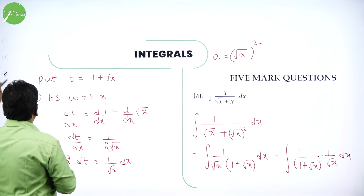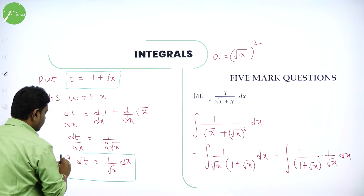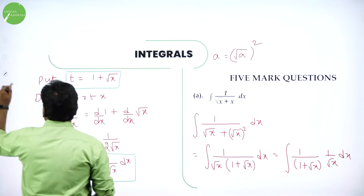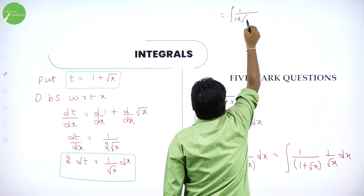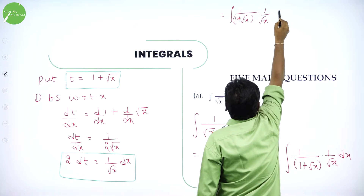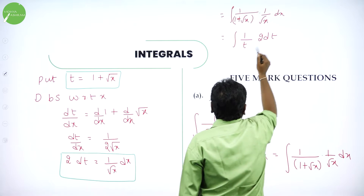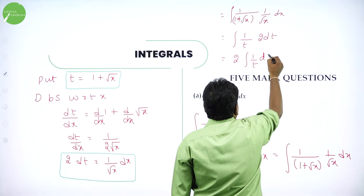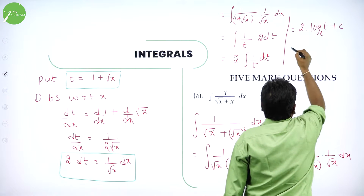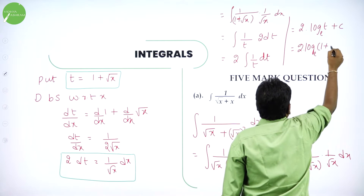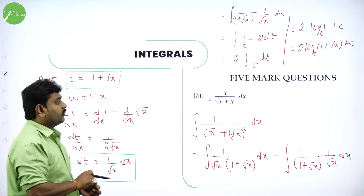So, now in spite of 1 by root x, you can do this substitution. In spite of 1 plus root x put t, in spite of 1 by root x dx, the remaining part is 1 by root x dx. So, the given problem integral of 1 by 1 plus root x into 1 by root x dx, I can write it as integral of 1 by t, 2 dt. 2 is constant, take it out. Integration of 1 by t dt. So, integration of that is 2 into log t plus c, that is 2 times log of 1 plus root x plus c.